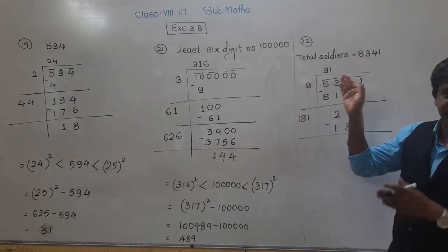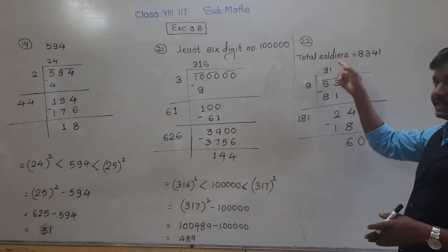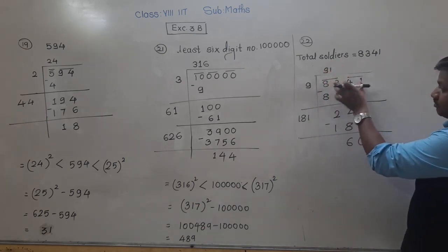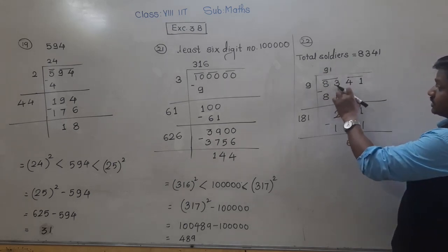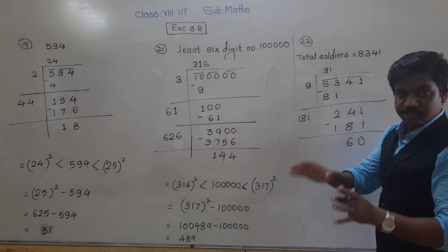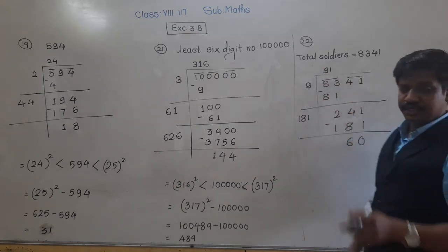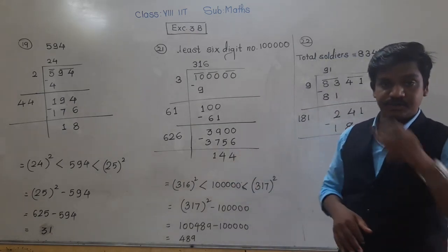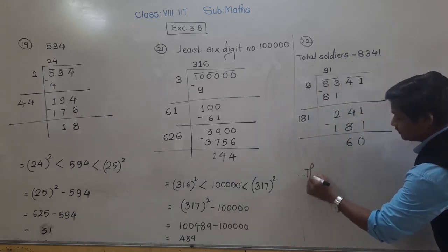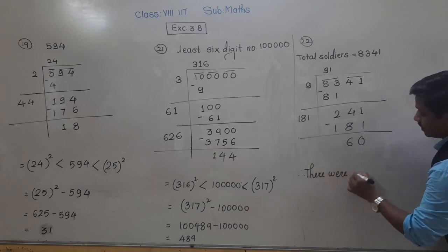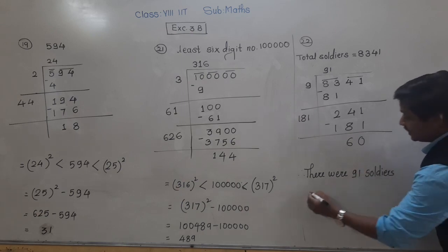So how many soldiers were in each row? 91. There were 91 soldiers in each row. The square of 91, when we subtract 60 from 8341, gives us the square number of 91. So 8341 minus 60 soldiers were used to form the square shape, and that equals 91 squared. In each row and column, there were 91 soldiers.